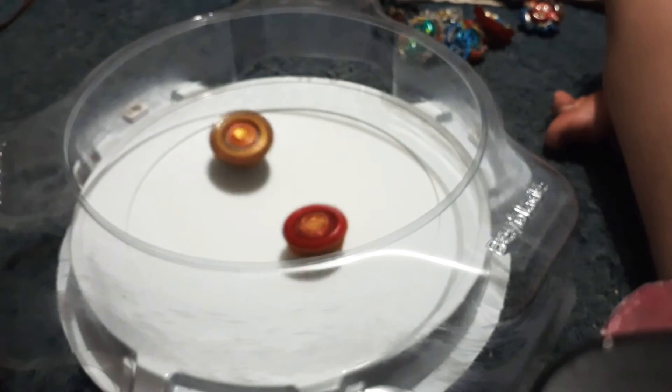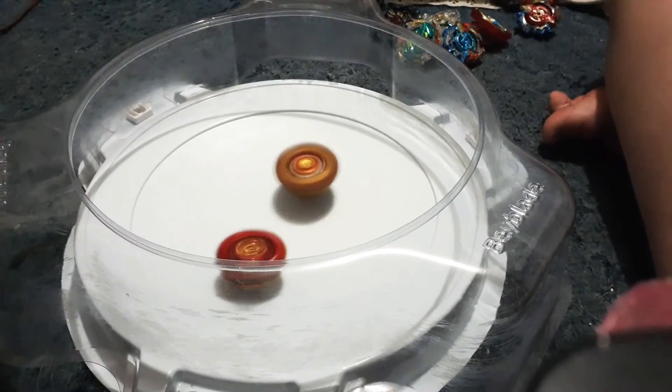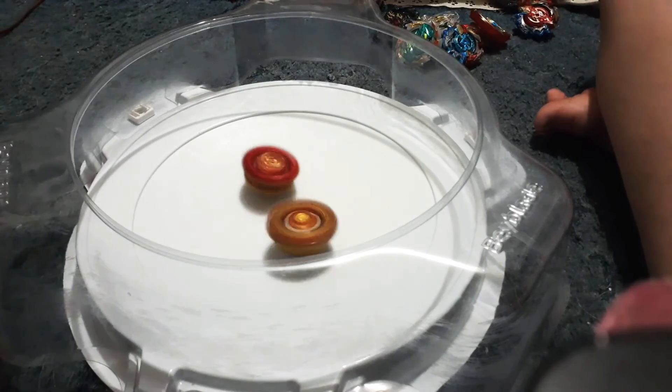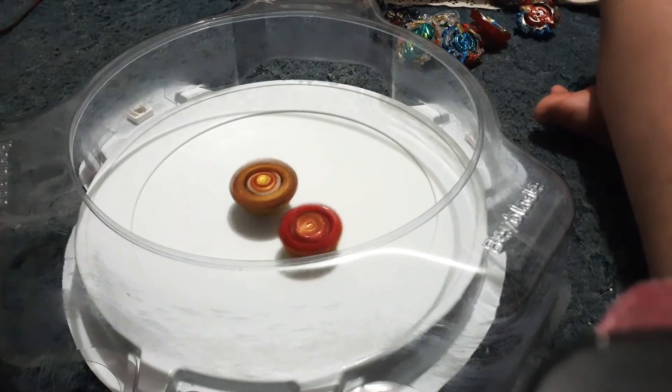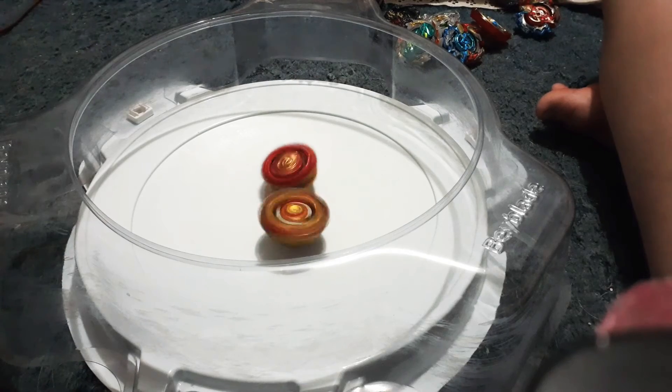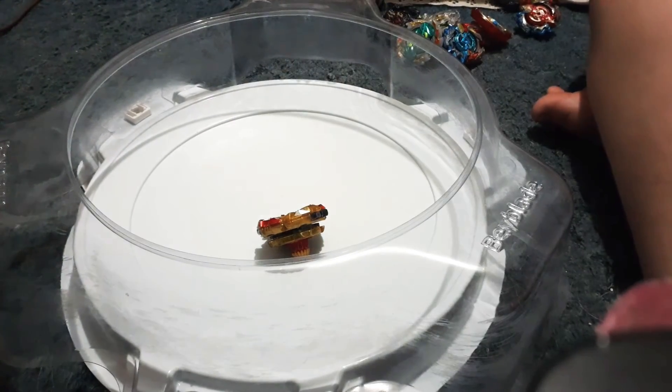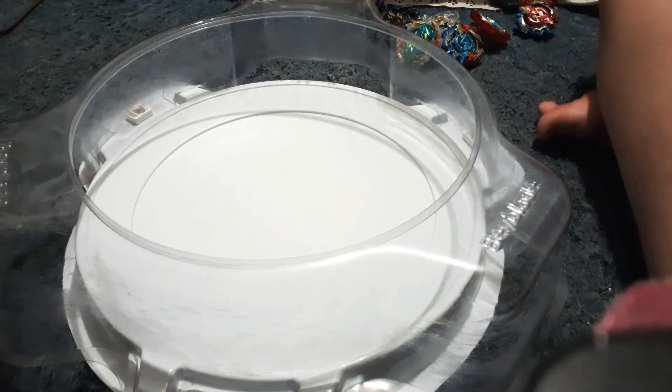Looks like Spriggan's attacks are being shut down by Amaterios. Who's going to take the win? You know, if I lose, I don't know. I should have expected it. Who has more L.A.D.? And of course, it is Spriggan. The score is one to zero. Three, two, one, let it rip.